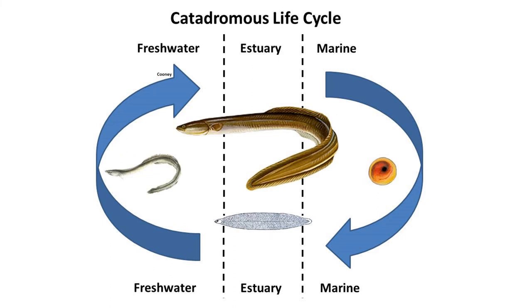The other life cycle is catadromous. The blue crab and the American eel are the most characteristic examples in our region. In these species, animals lay their eggs in a marine system, grow a little there, but re-enter the estuary quite small, do the vast majority of their growing in fresh water, and then migrate out as adults to lay their eggs in marine systems again.